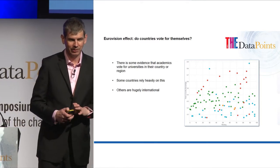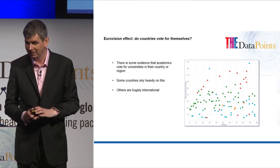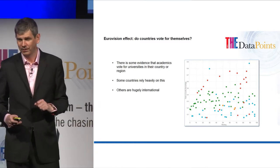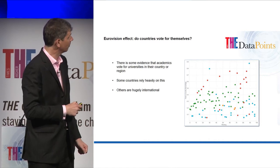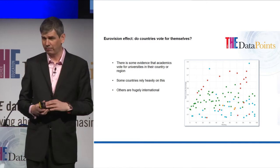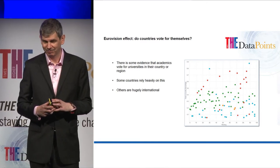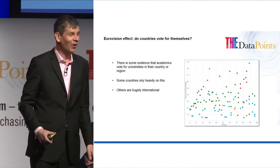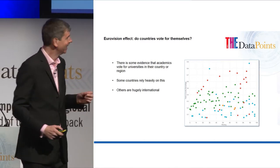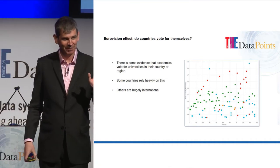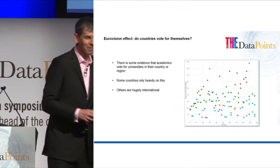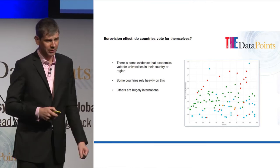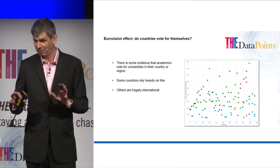The blue dots are Europe. There are two exceptions — European institutions who get most of their votes from their own country. Think of a European country very proud of itself. It's Russia — that's Lomonosov State University and St. Petersburg. The green dots are America, and you can say there's a good reason for that — it's a big country, there's lots of call for in-country voting. The red ones are Asia. Asian universities tend to get more of their votes from in-country than almost any other region, with a few exceptions: Hong Kong, Taiwan, and Singapore are very international in outlook.